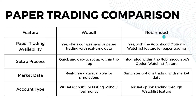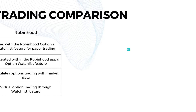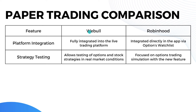For account types, Webull offers a virtual account for testing without real money, while Robinhood offers virtual option trading through the watchlist feature. For platform integration, Webull is fully integrated into the live trading platform, while Robinhood is integrated directly in the app via the options watchlist.